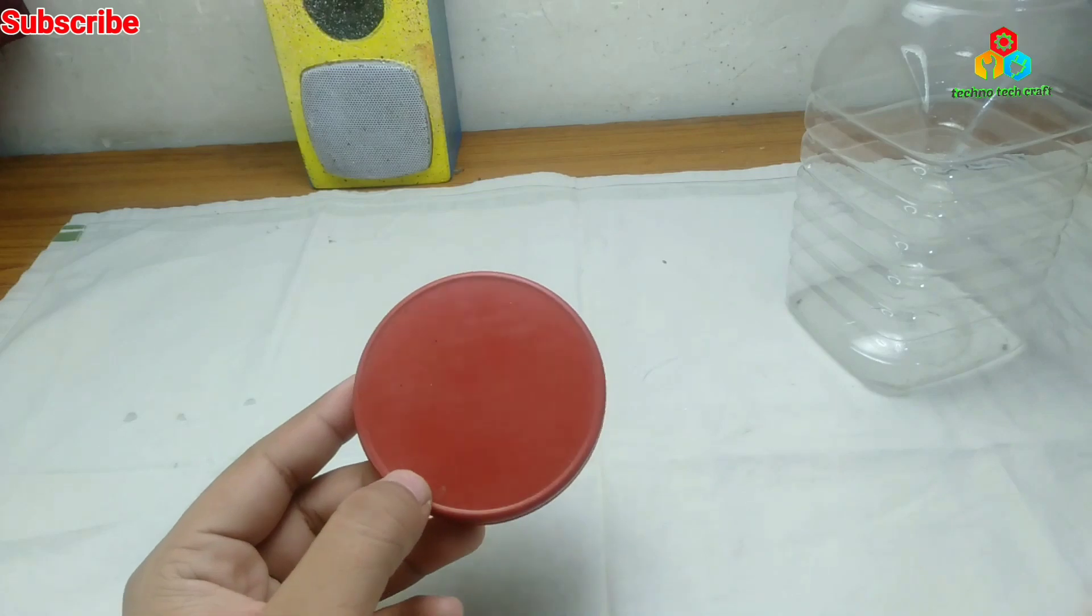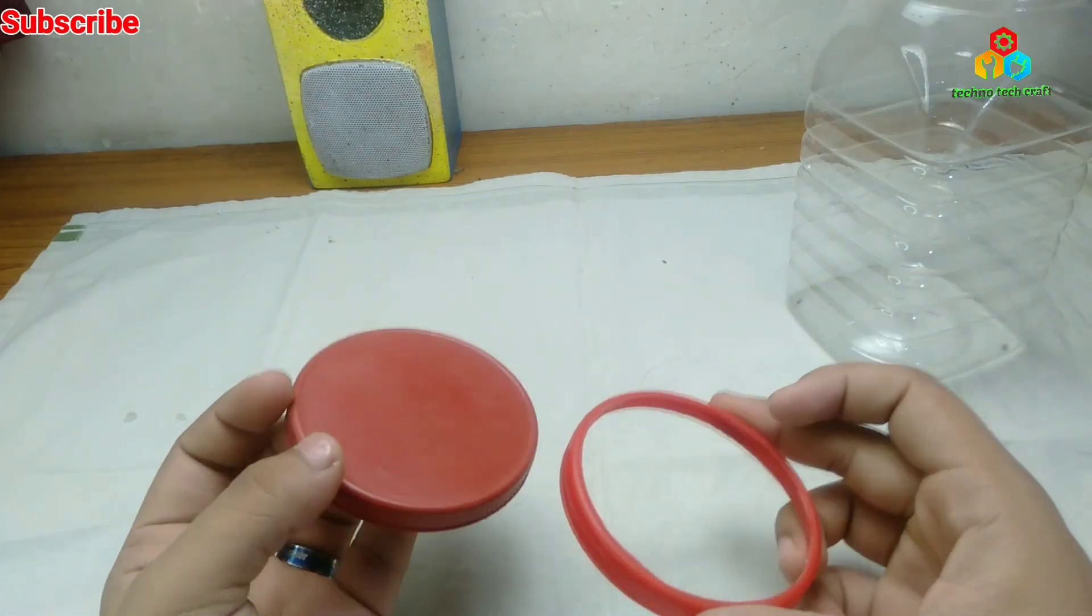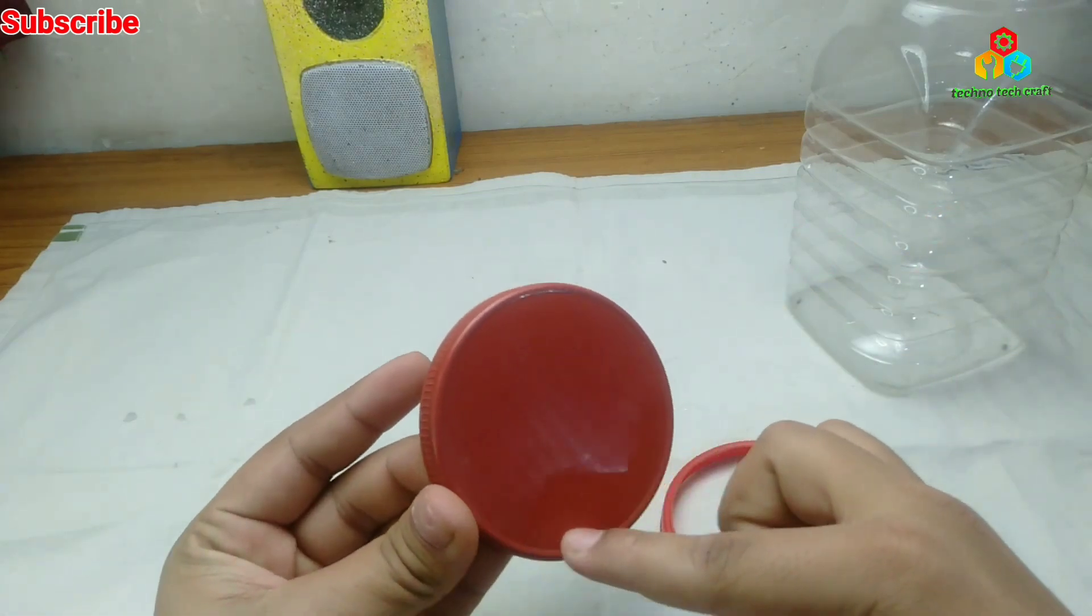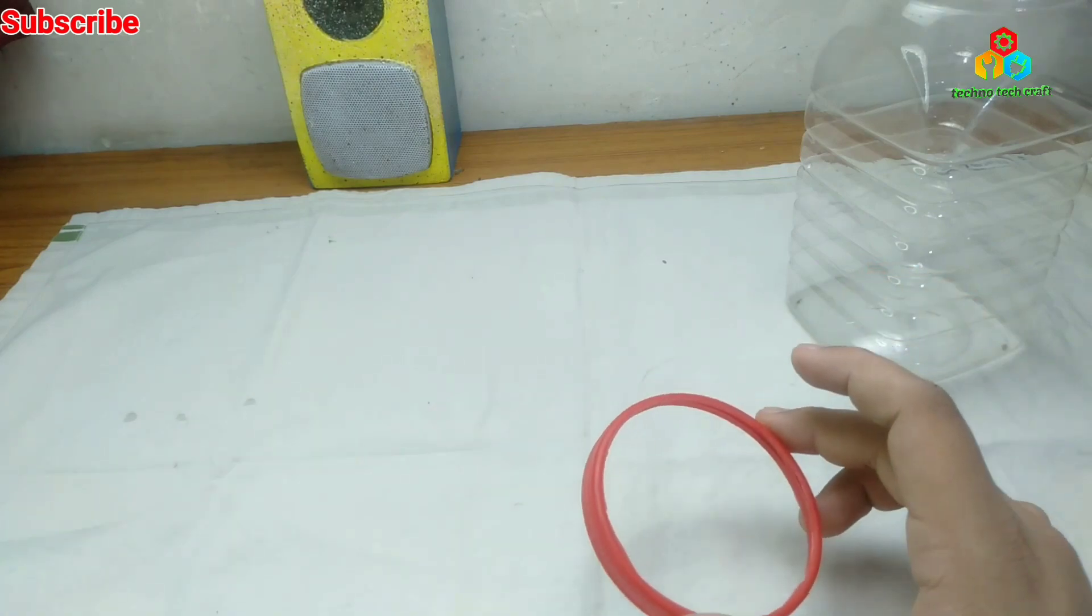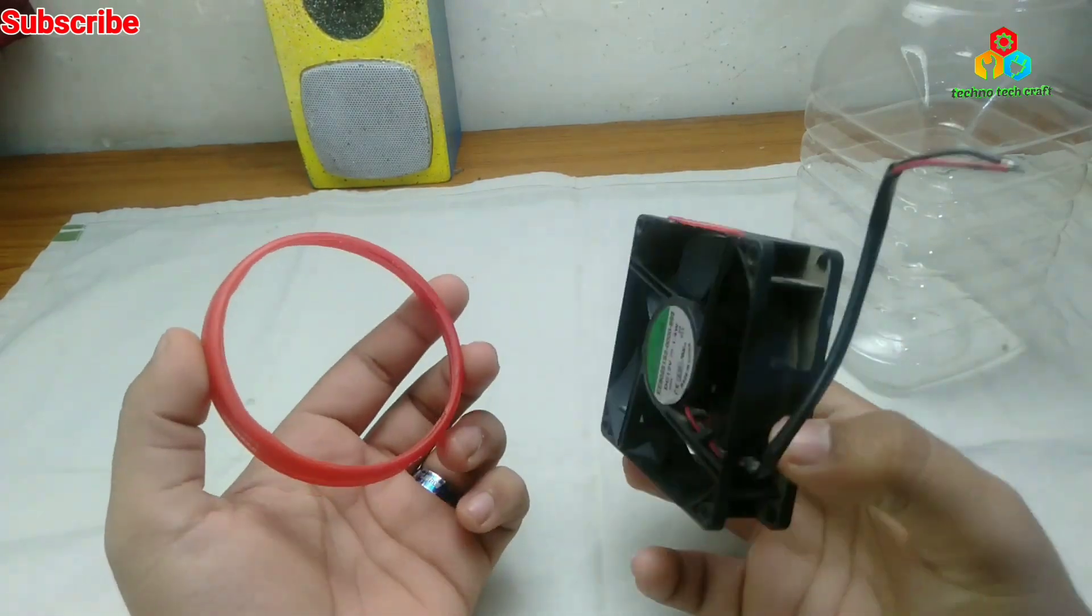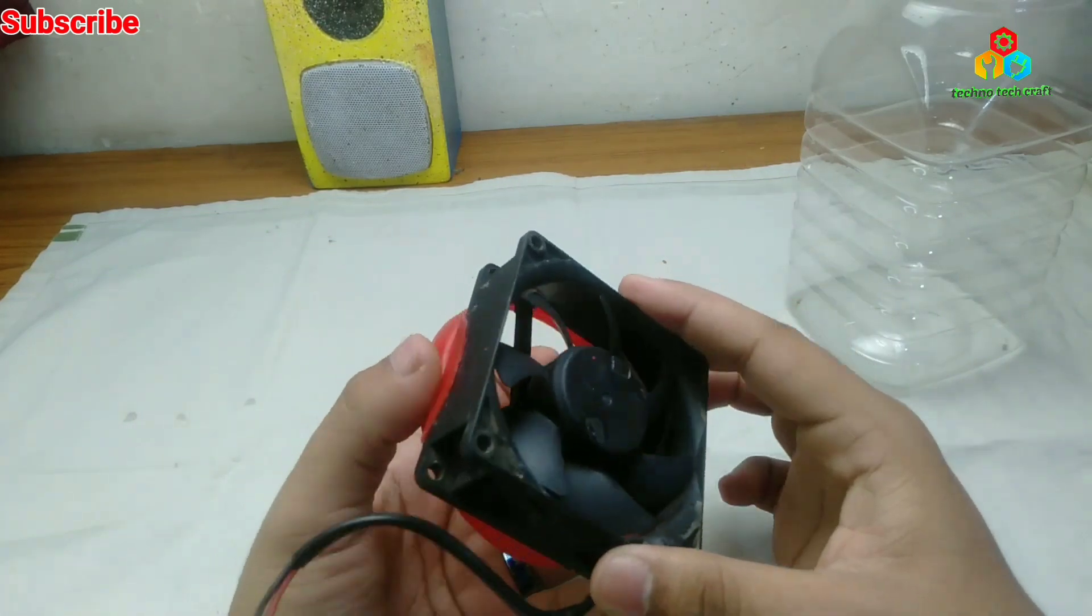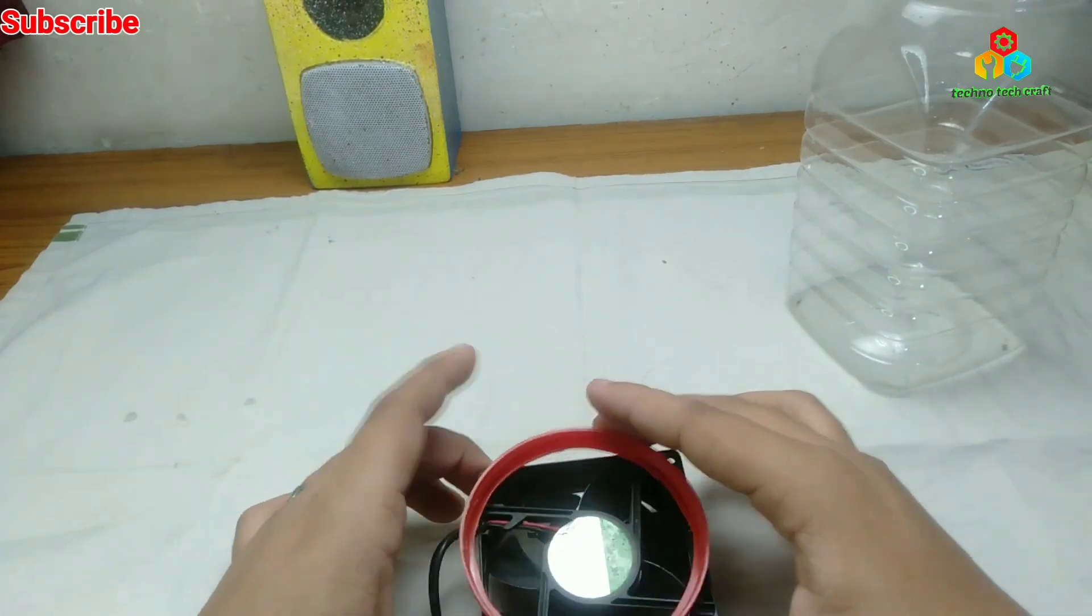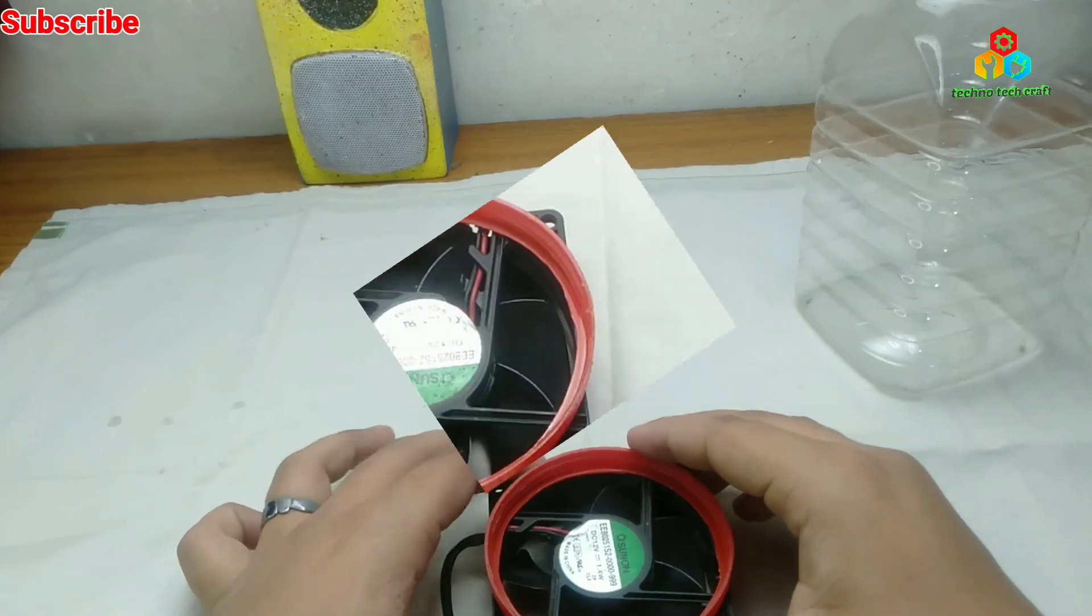First of all, our container has been cut. As you can see, it's just a side rim. So now we will put it with a CPU fan. So our CPU fan will fit in our container.